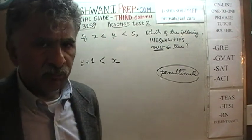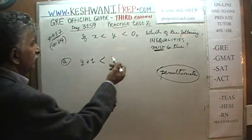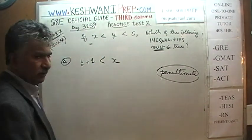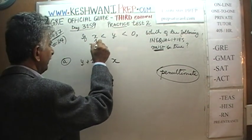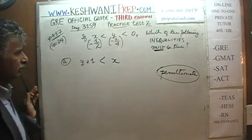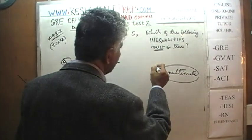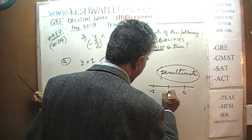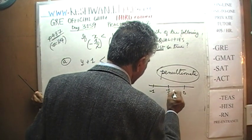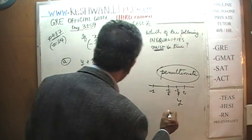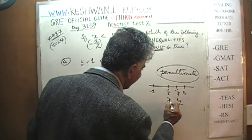The easiest, quickest, most economical way here is to simply plug in some numbers. Let's plug in negative one-half for x and negative one-quarter for y. That works: x is less than y, and both are less than zero. On the number line, negative one-quarter is y and negative one-half is x.